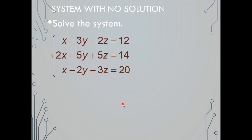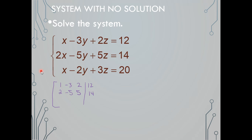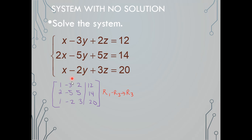Let's look at an example of a system with no solutions. We'll use either Gaussian or Gauss-Jordan elimination. First, we augment the matrix — taking all the leading coefficients and constants and writing them in matrix form. I want a 1 in the diagonal: there's a 1 in row 1 and a 1 in row 3. So I take row 1, subtract row 3, and put it back in row 3. This gives us a 0 in row 3 for x, and the first row stays exactly the same.